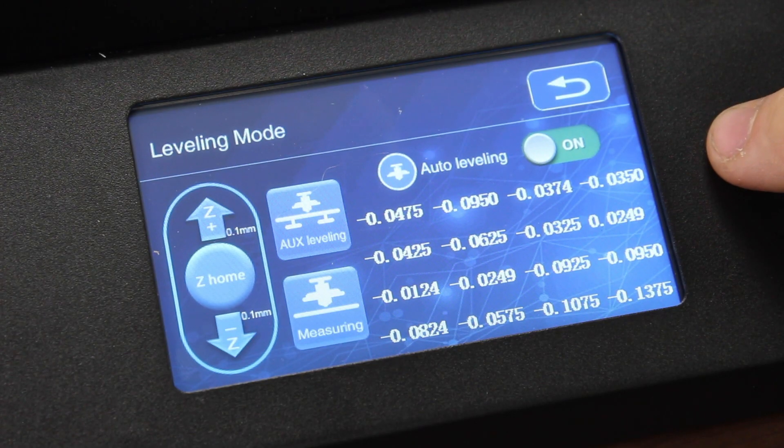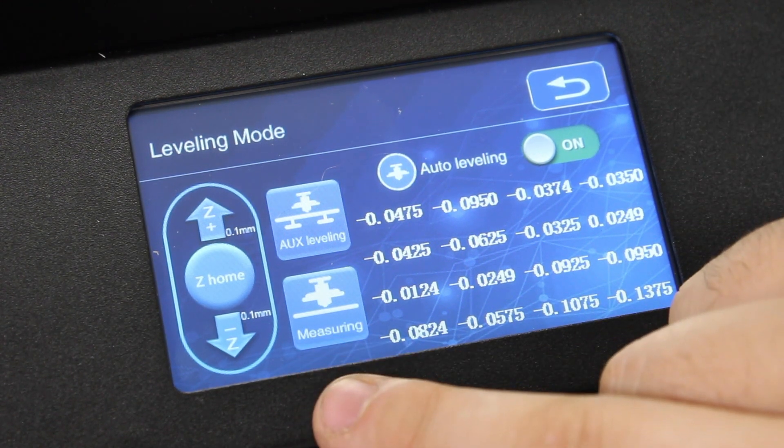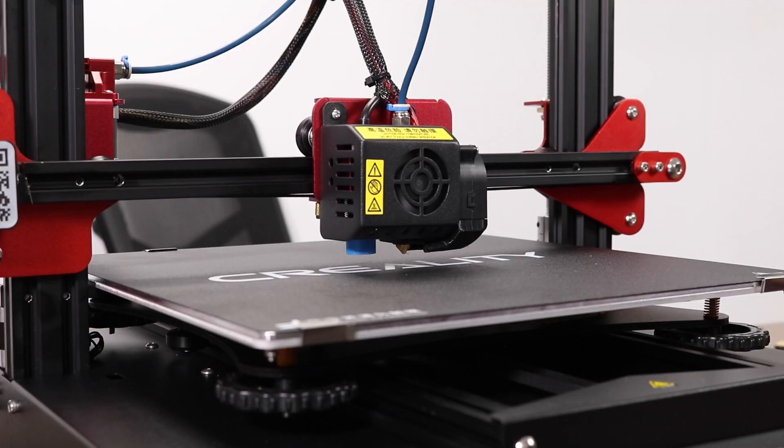It's always good to re-verify this with the feeler gauge after you're done setting the offset. After setting the offset, now we can measure the bed and create a grid. Press the Measuring button and it will go through and auto-home and level the whole bed.